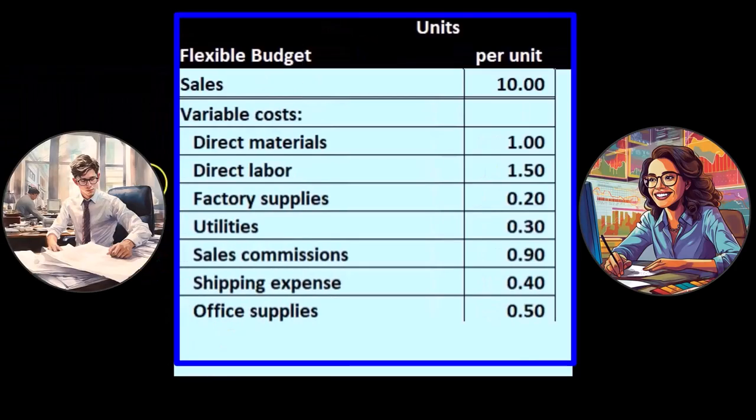We have the variable costs, then the fixed costs. A flexible budget might look something like this: we want to break out the sales by unit and then break out the variable costs by unit. They're variable, and therefore they're going to have a constant change with the number of units.